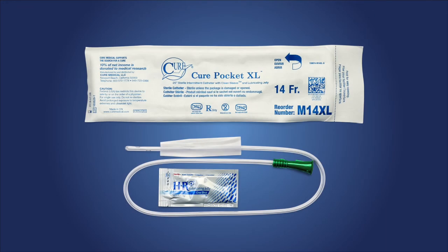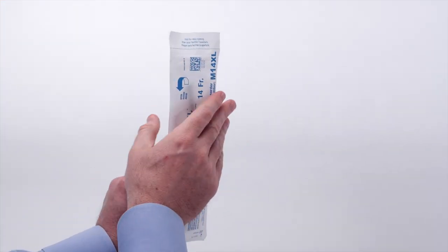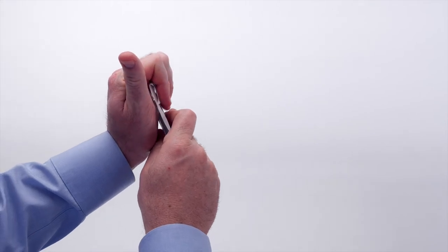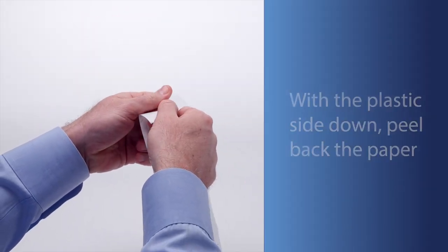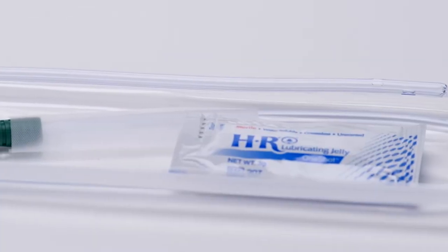With clean hands, open the pocket catheter package. The large flaps enable opening with less effort. Keep the clear plastic side of the open package on a flat surface so that the contents are contained in the sterile environment.